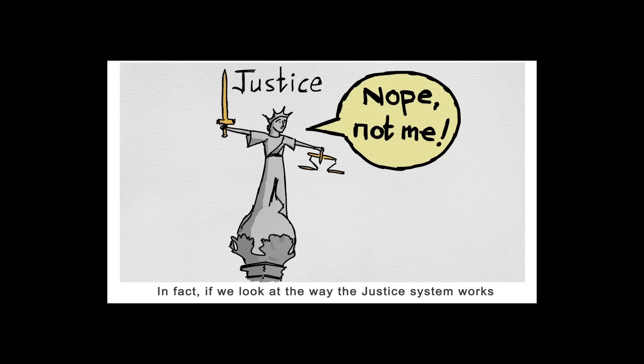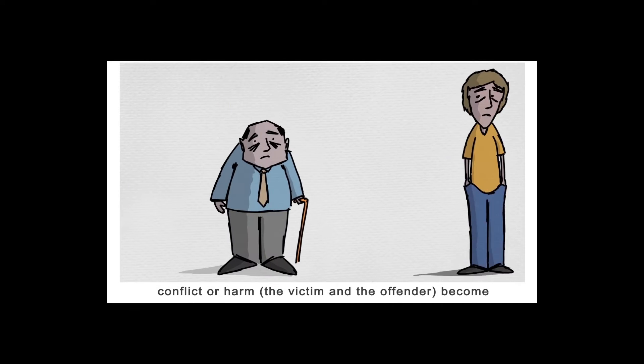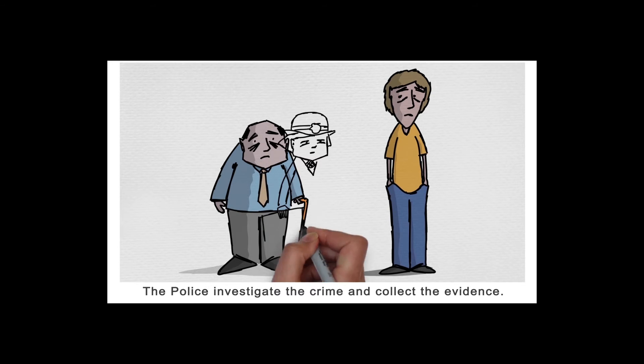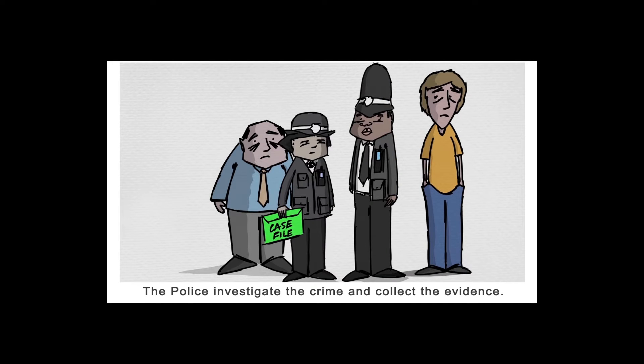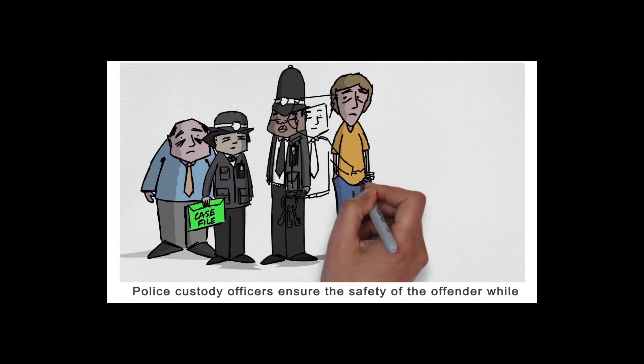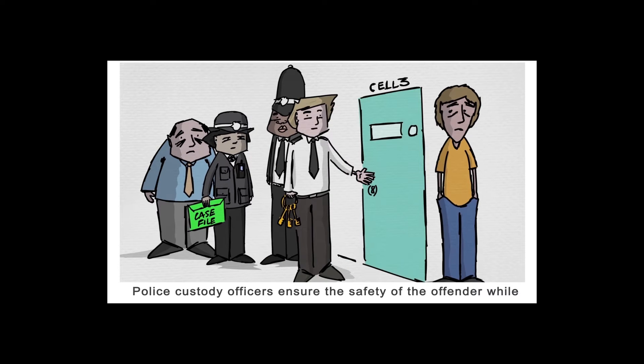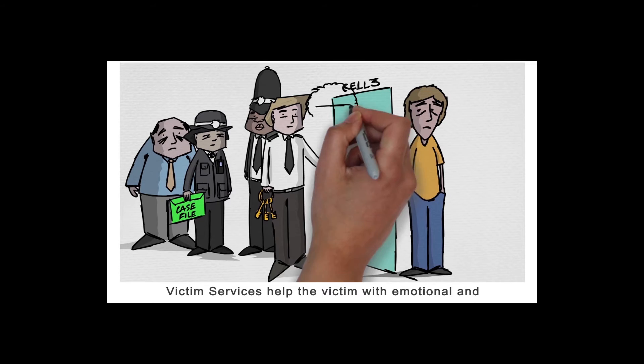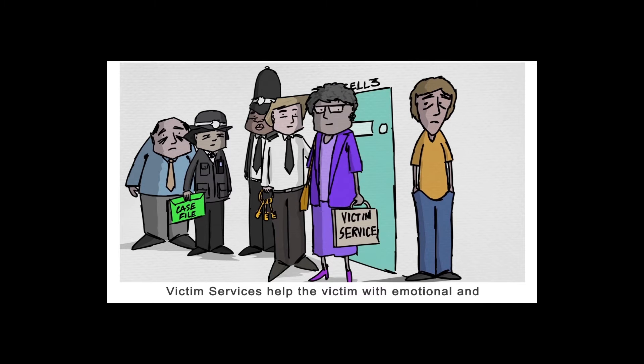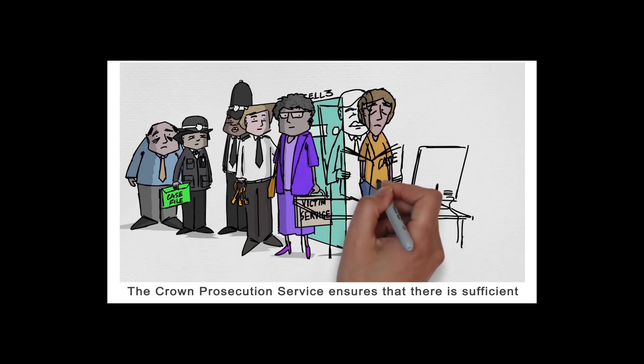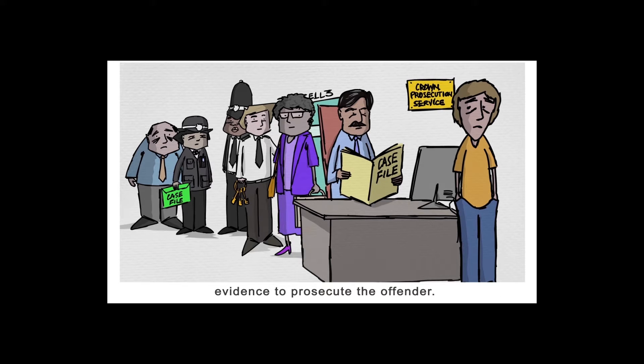In fact, if we look at the way the justice system works, it becomes apparent that the parties actually involved in the conflict or harm – the victim and the offender – become increasingly separated. Police investigate the crime and collect the evidence. Police custody officers ensure the safety of the offender whilst in custody. Victim services help the victim with emotional and practical support.